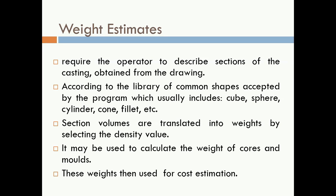Multiplying mass by acceleration due to gravity (g) gives weight using W = mg. That weight represents the metal required for one casting. For an order of 10,000 castings, we multiply by 10,000 to estimate total material cost. Similarly, weight of molding sand and core sand can be determined, and their cost estimated. Weight estimation is used for cores and molds as well.